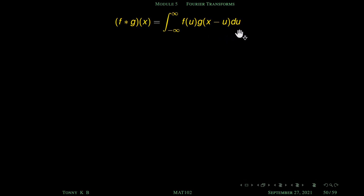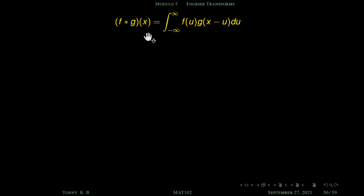This integration is with respect to u. So after integrating we substitute the lower and upper limits — the entire thing is a function of x. That's why f star g of x is a function of x. This is the definition of f star g.